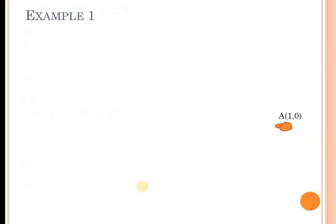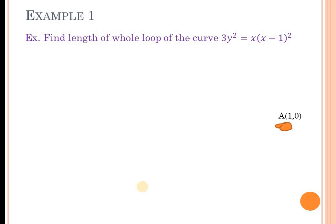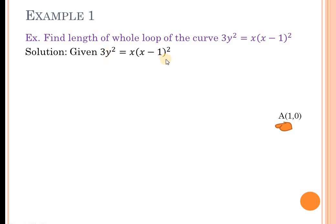Now we see an example. First example: find the length of the whole loop of the curve 3y² equals x(x − 1)². The given equation of the curve is 3y² equals x(x − 1)², which is a relation between y and x. We can write y as a function of x, so we assume y equals f(x). Now we see the properties of the curve and first draw the curve. The curve is symmetric about the x-axis, since y is squared — the power of y is even.